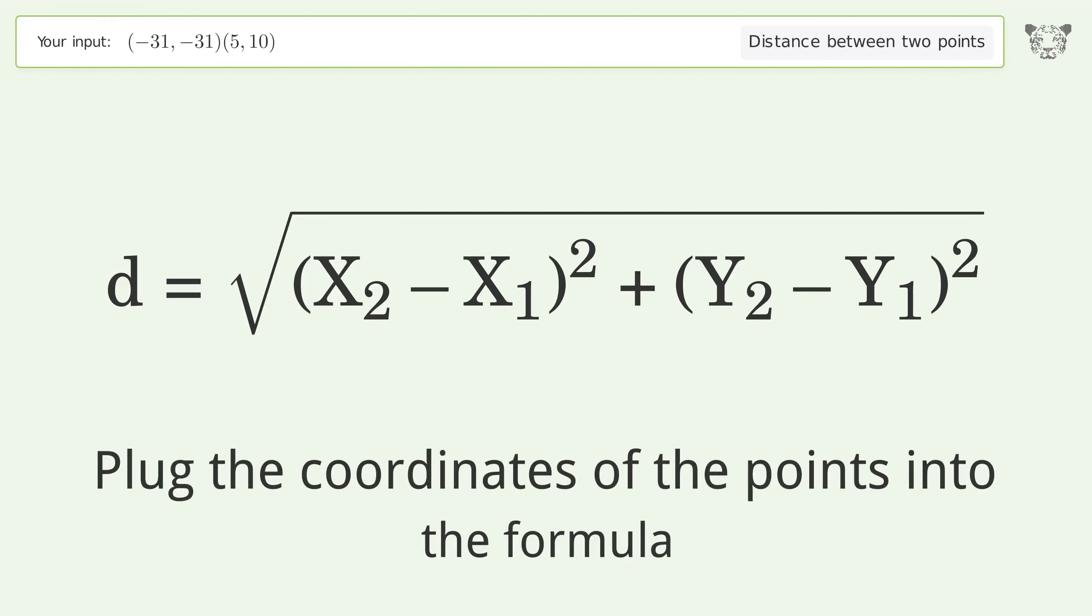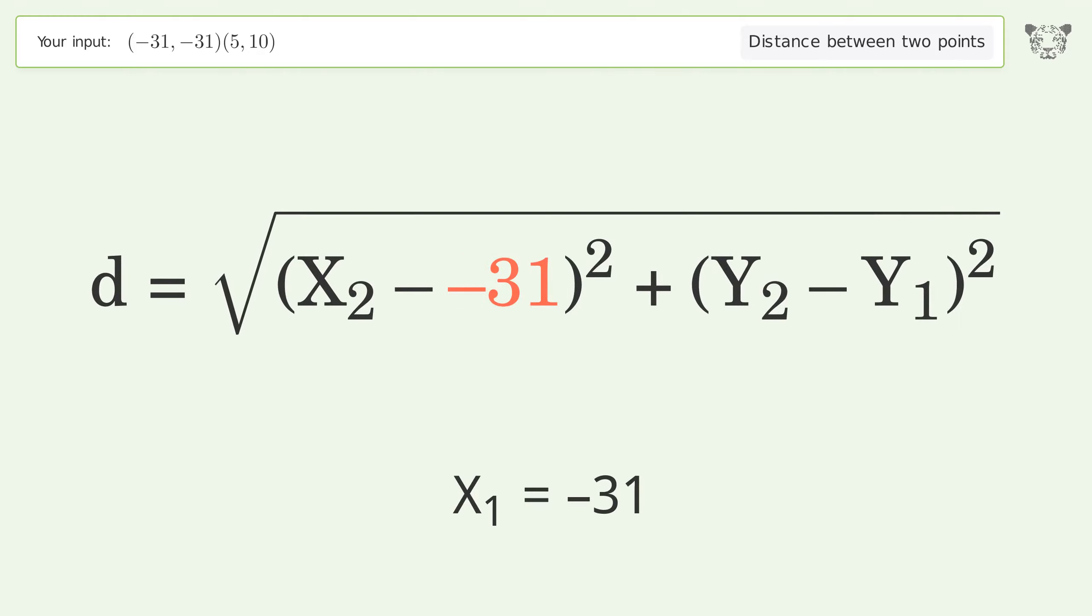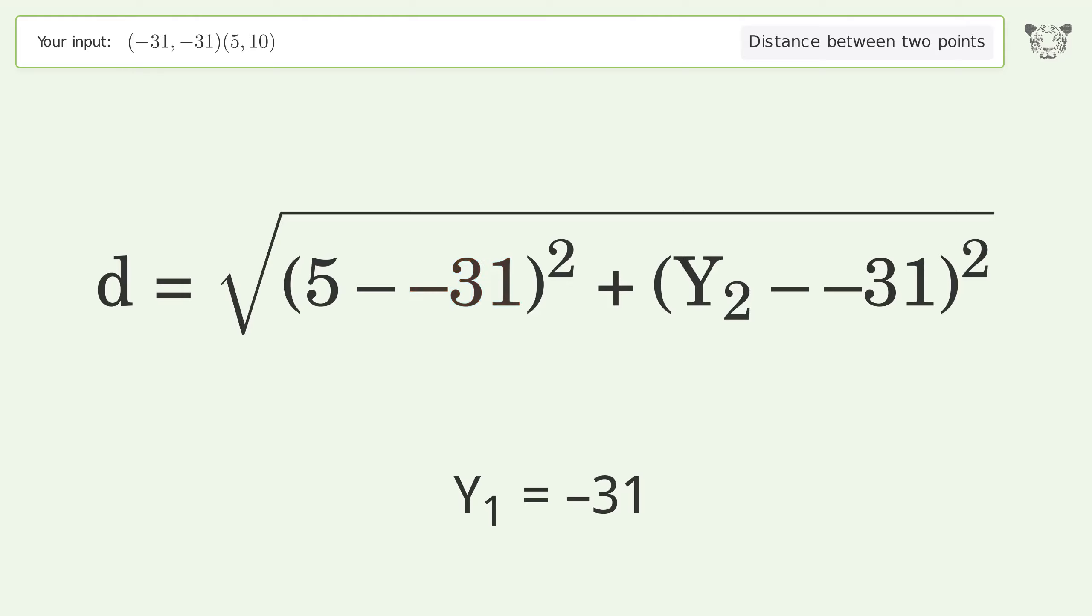Plug the coordinates of the points into the formula. x1 equals negative 31, x2 equals 5, y1 equals negative 31, y2 equals 10.